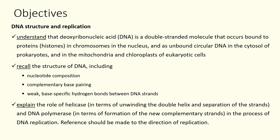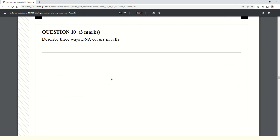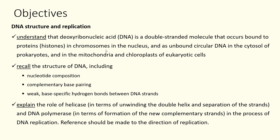So understanding that DNA is double-stranded and it occurs in three separate forms. This was a sticking point for some students last year because of the way this syllabus objective is written. There was a question in the exam which said describe three ways DNA occurs in the cell. Three ways it occurs in the cell are: as chromosomes in eukaryotic cells inside the nucleus, where DNA is wrapped around a protein known as a histone; in prokaryotes as unbound circular DNA that floats around the cytosol; and in eukaryotic cells within the mitochondria and chloroplasts.